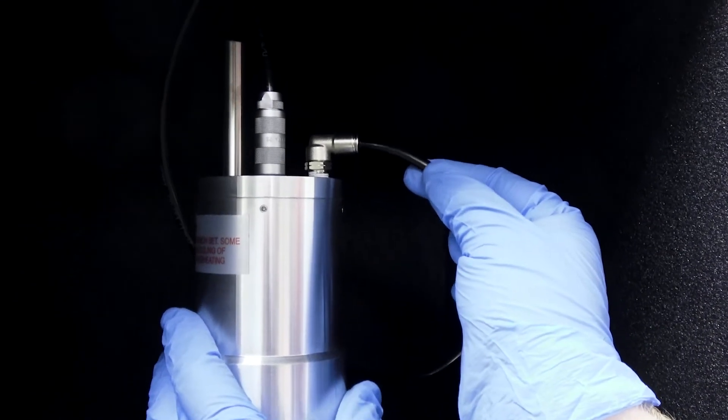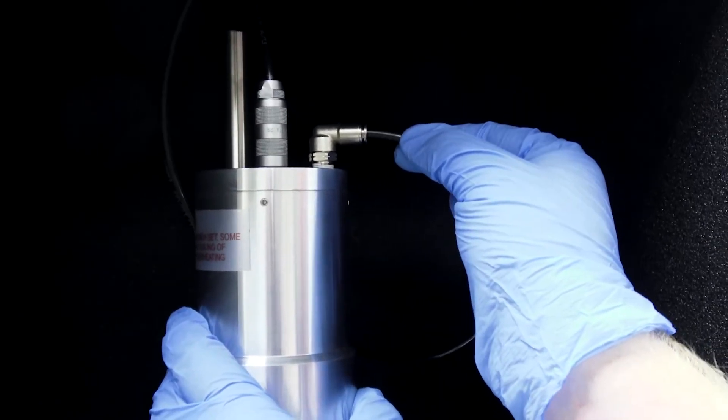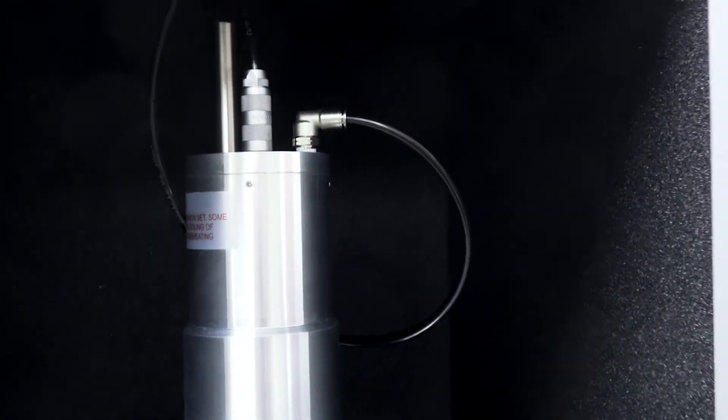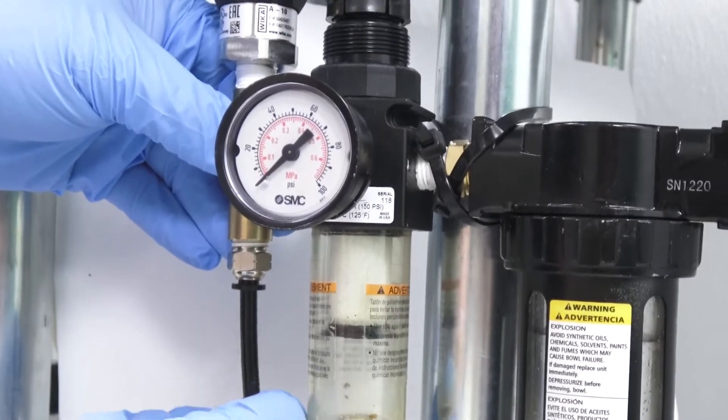We'll connect an airline to the air fitting atop the transducer, then we'll connect the other end of the airline to an air dryer unit.